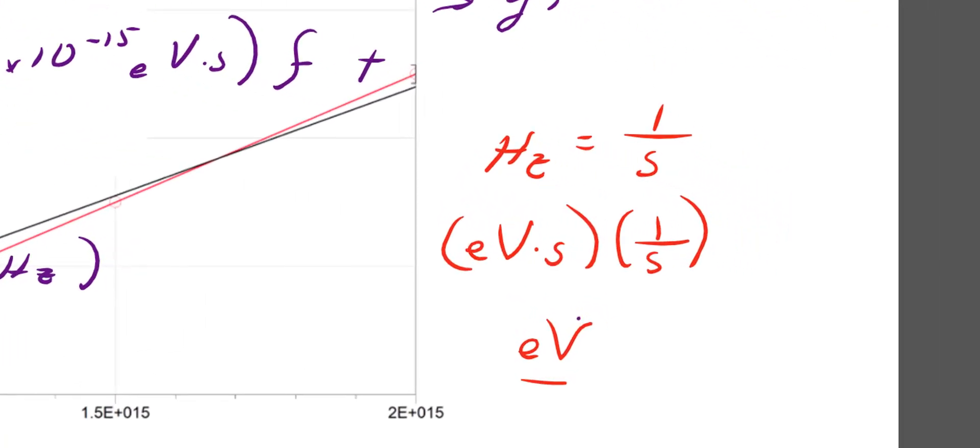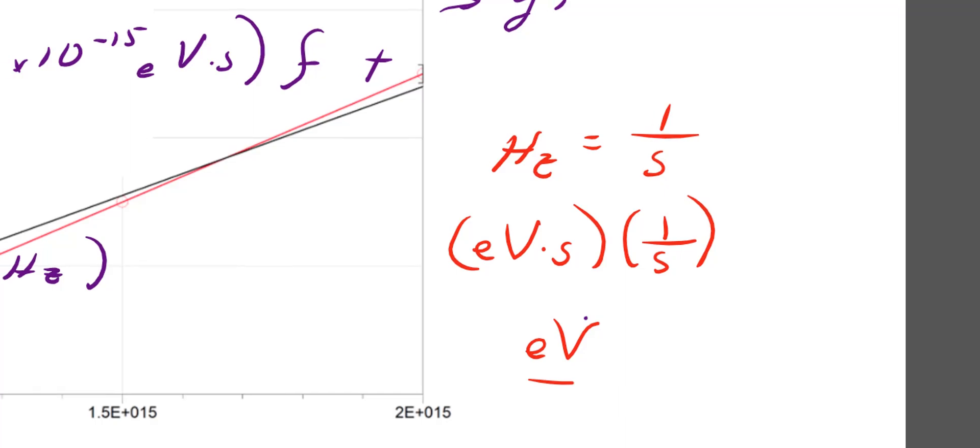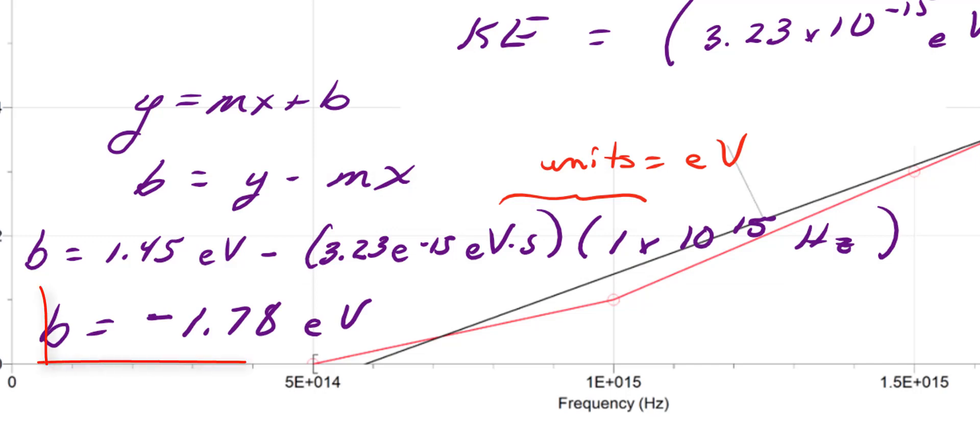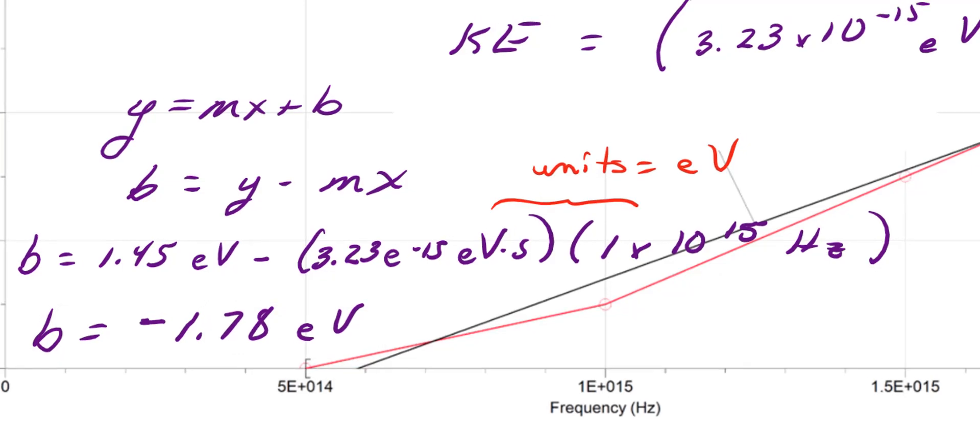A quick look at units again. I have electron volts times seconds times Hertz, but that gives me electron volts times seconds times 1 over seconds are just plain electron volts. So my second term, mx, ends up being just electron volts for that term's units. And I get b is equal to negative 1.78 electron volts.